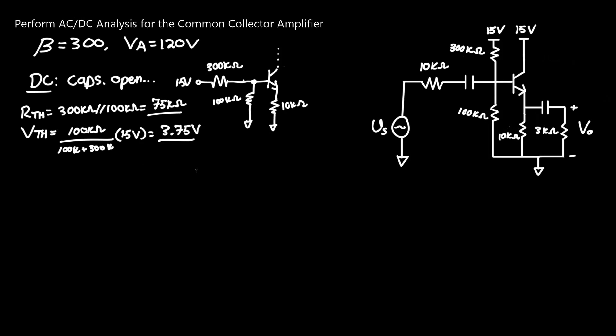Redrawing this circuit, we have 3.75 volts attached to this new resistance of 75 kilo ohms, and we can go straight to the BJT, which still has this 10 kilo ohm resistor down here.